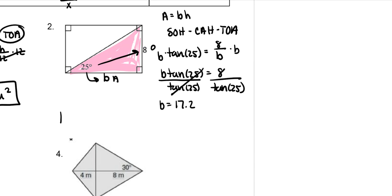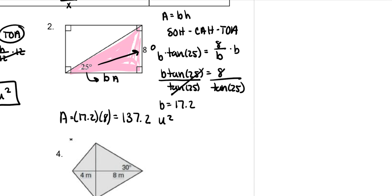Now we can do the area: 17.2 times 8. I always recommend you go back and use the unrounded answer. Since that answer is the last one I did, I'm just going to do times 8, which will use the previous answer — the whole thing — giving a more accurate answer of 137.2 units squared.